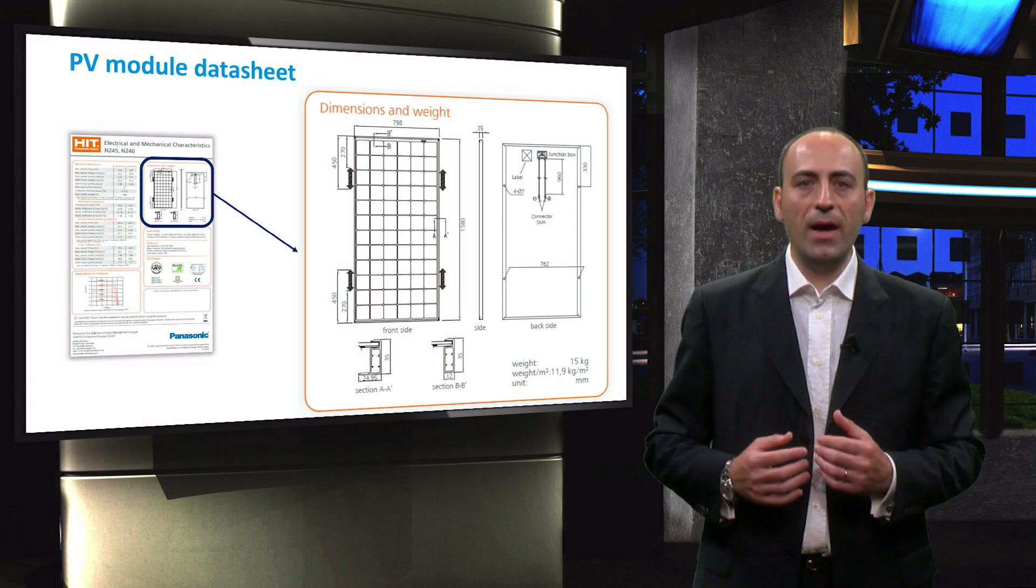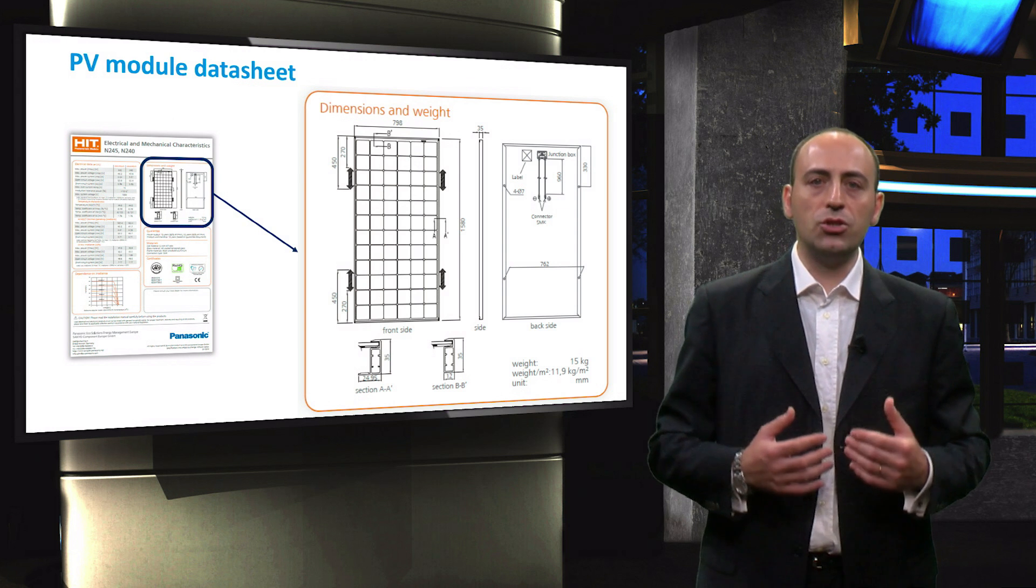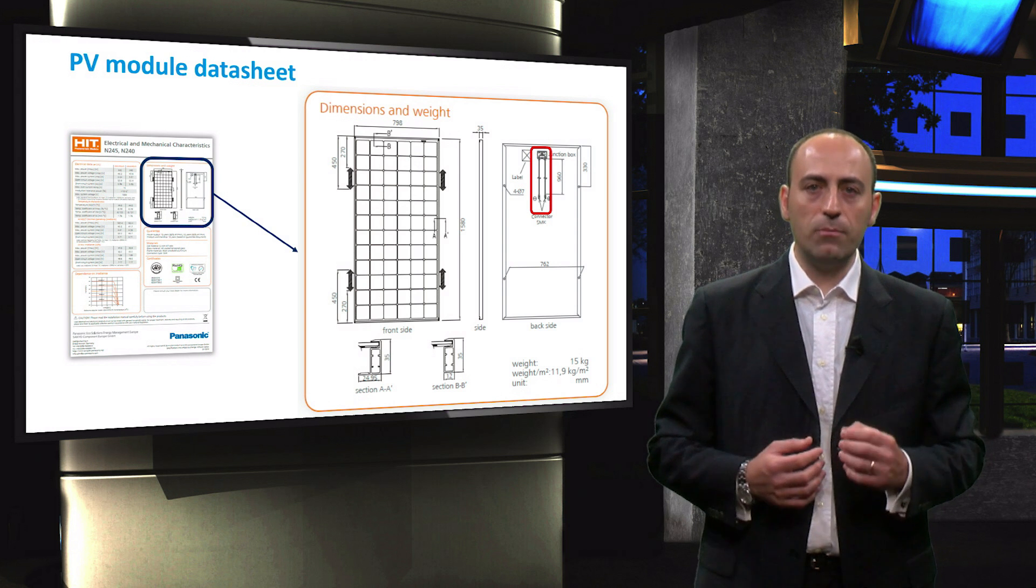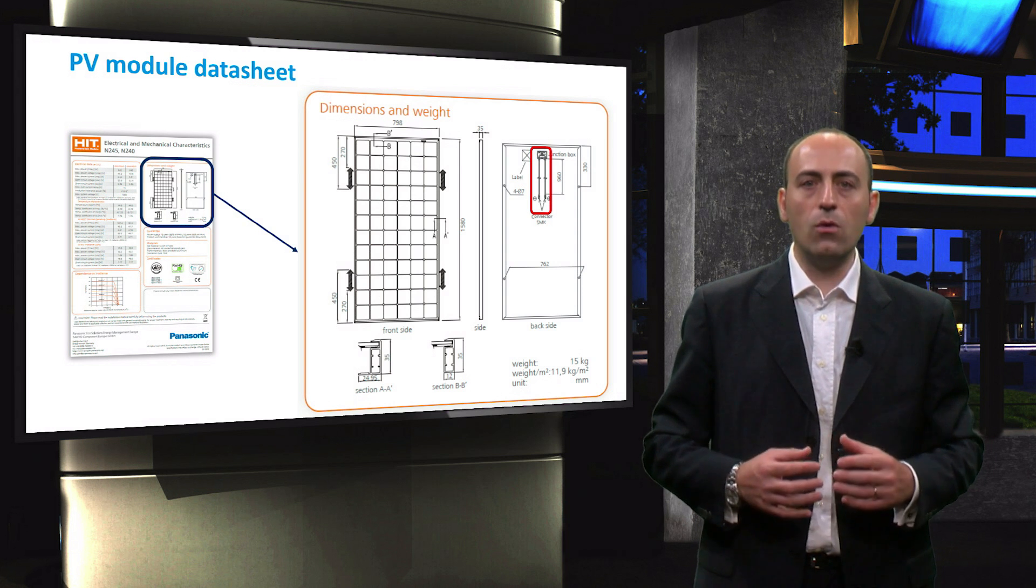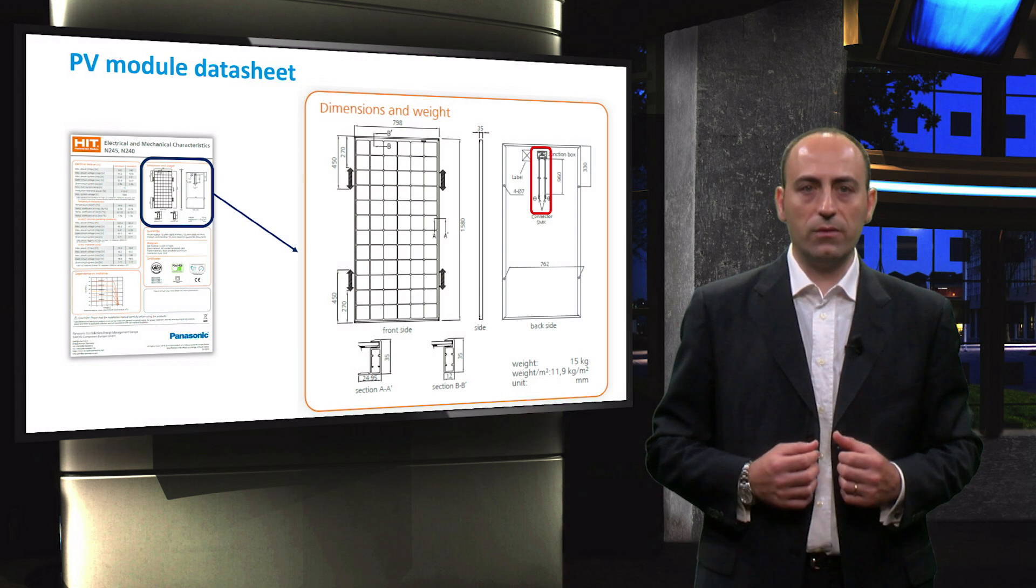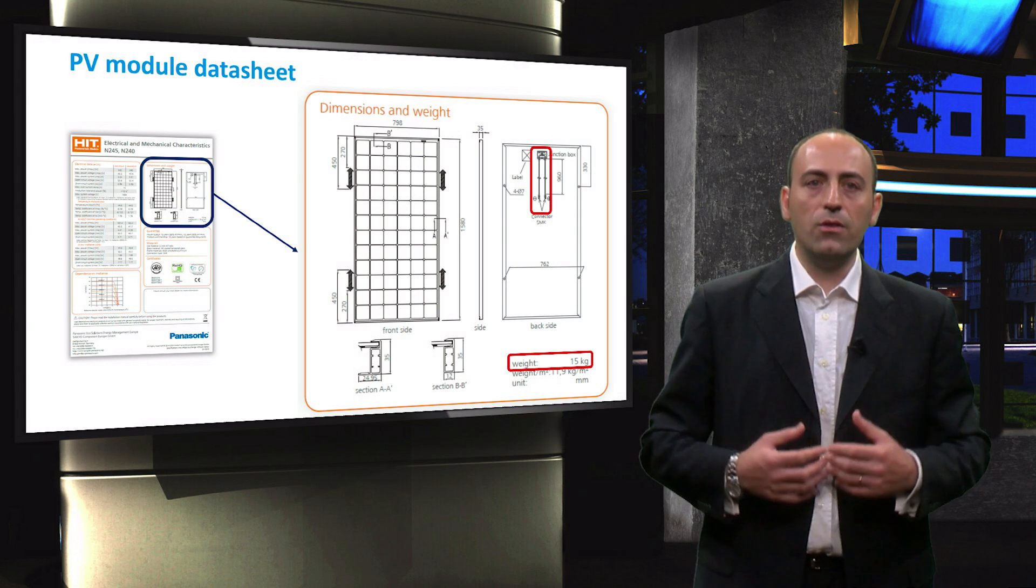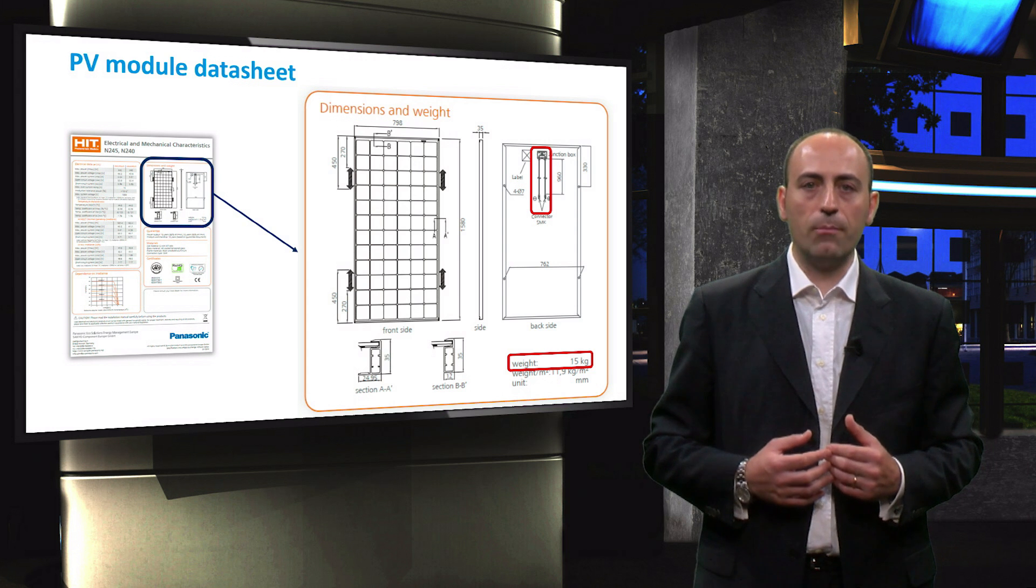Starting from the left hand side, we have front, side and back views including the frame and the junction box, which is represented by the little square on top of the back view with the connectors attached to it. Underneath the figure there is the weight that is 15 kg in this example.